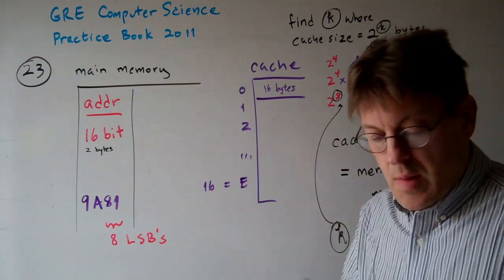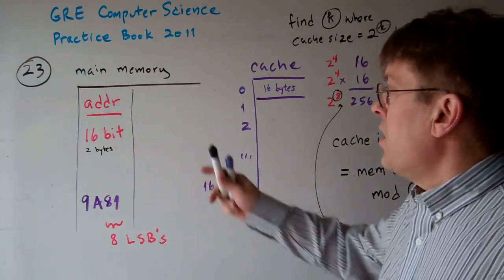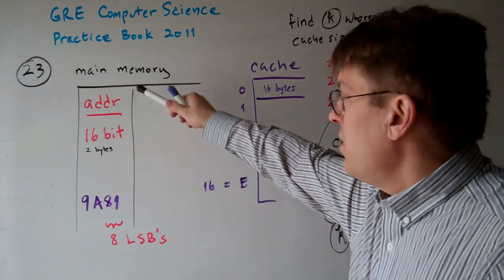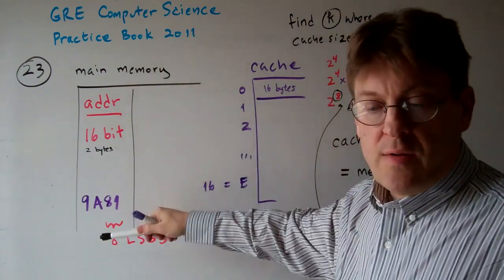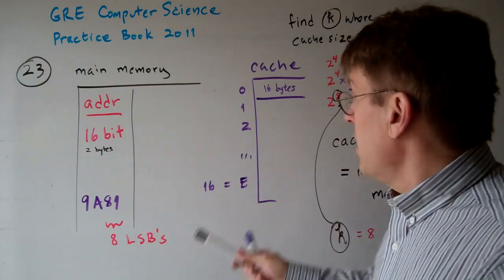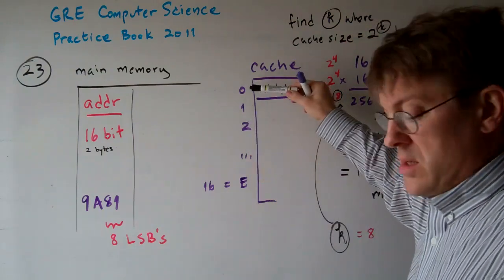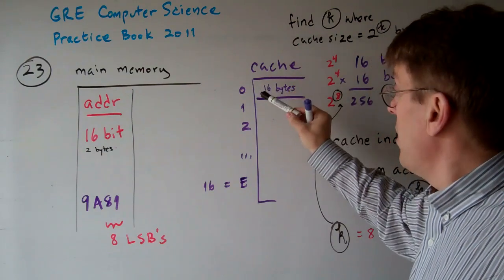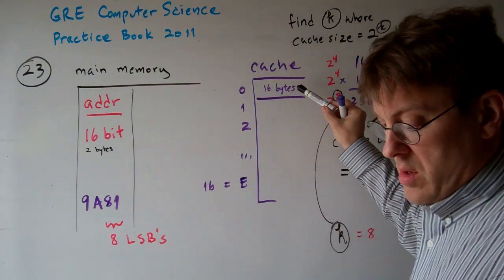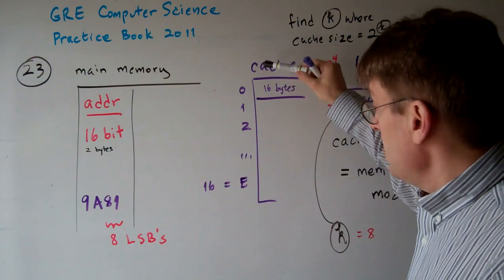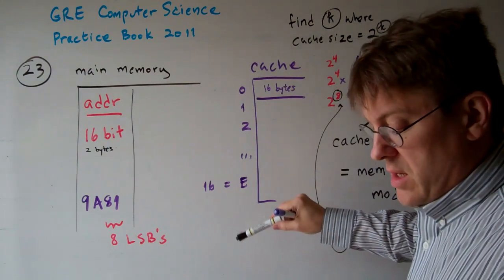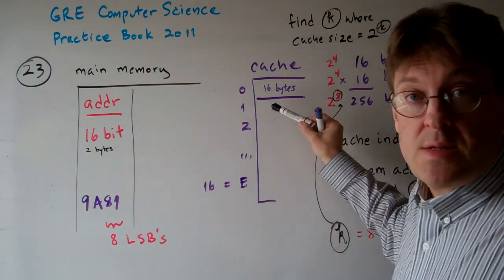Okay, the question now is, you have main memory, and main memory has a 16-bit address. We're given that in the first sentence. The cache is 16 blocks per cache line. Sorry, 16 blocks of data where each block contains 16 bytes. That's your cache.